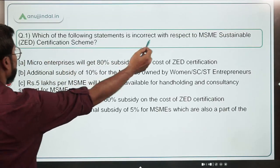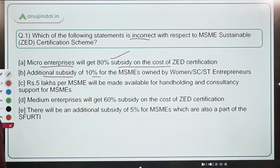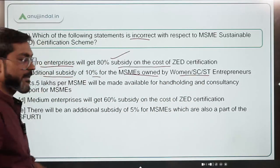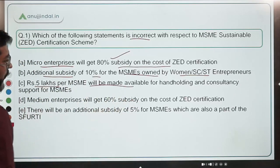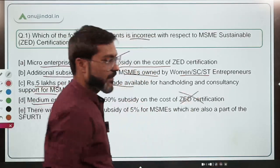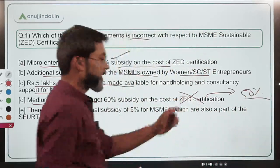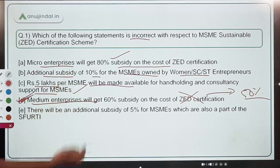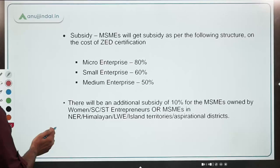Coming back to Question 1 — you have to identify the incorrect statement. Micro enterprises getting 80% subsidy is correct. Additional 10% for women/SC/ST entrepreneurs is correct. Rupees 5 lakh for hand-holding is correct. However, the statement that medium enterprises get 60% subsidy is incorrect — medium gets 50%, small gets 60%. Therefore, option D is the correct answer.